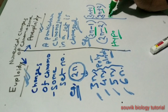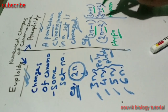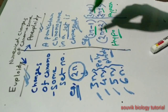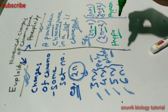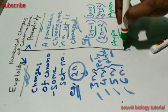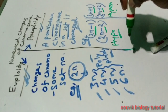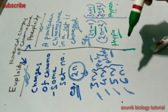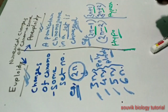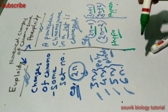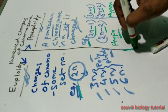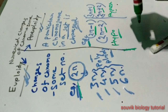So to summarize: a particular chromosome in a set is changed — that is aneuploidy. Whereas changes of chromosome set number is known as euploidy. I hope this video is helpful. Thank you very much.